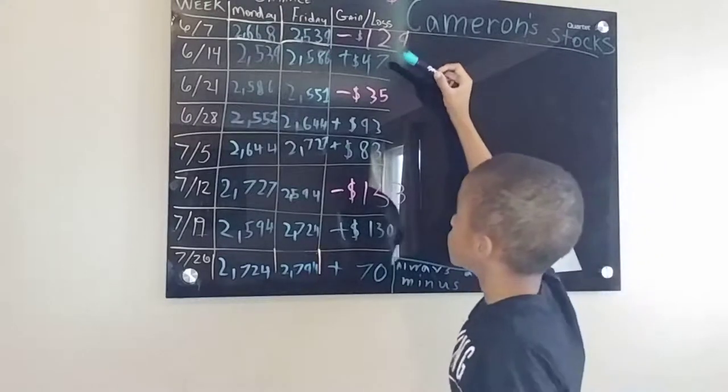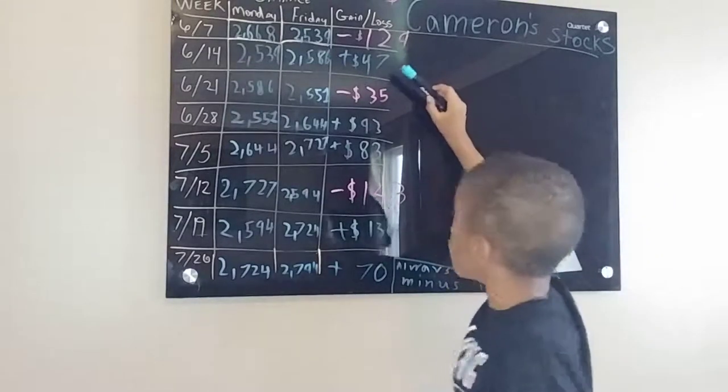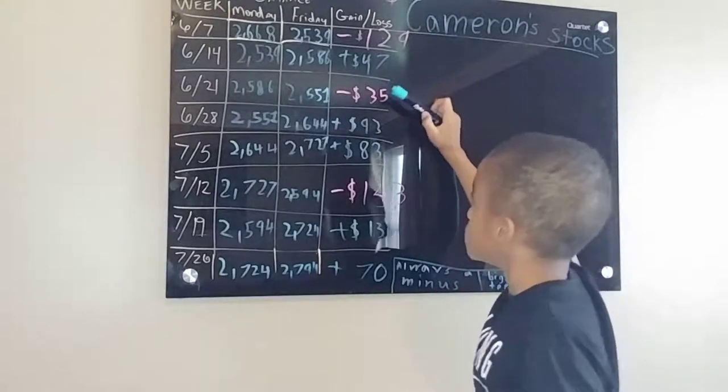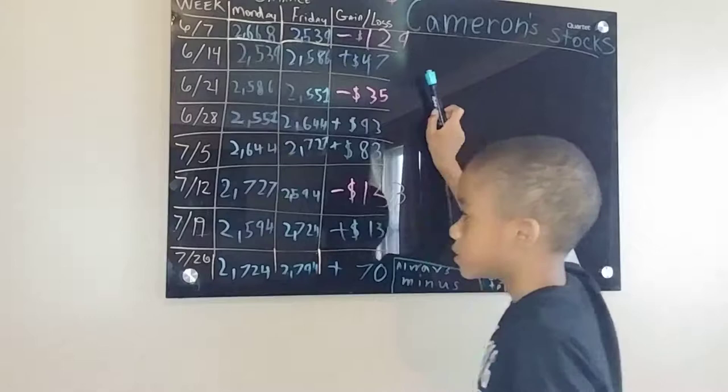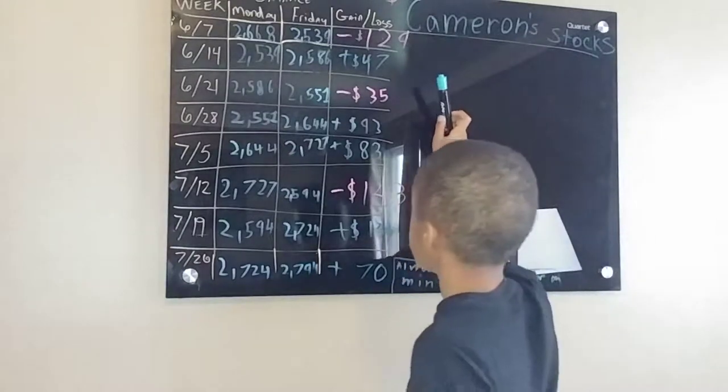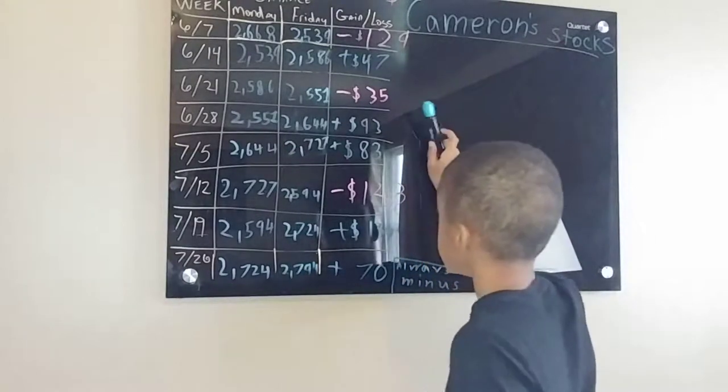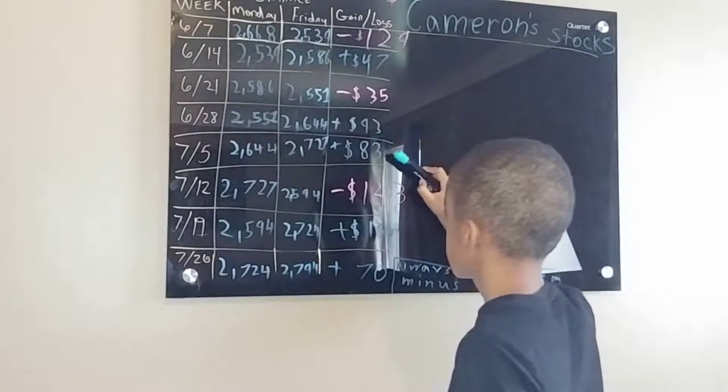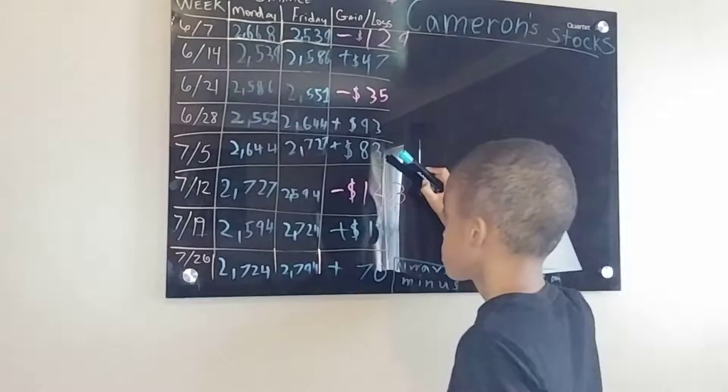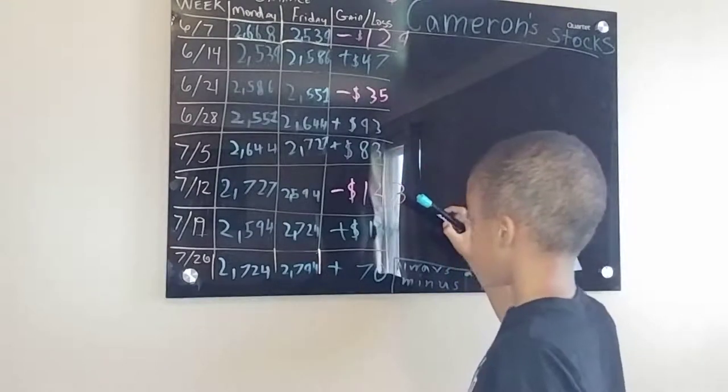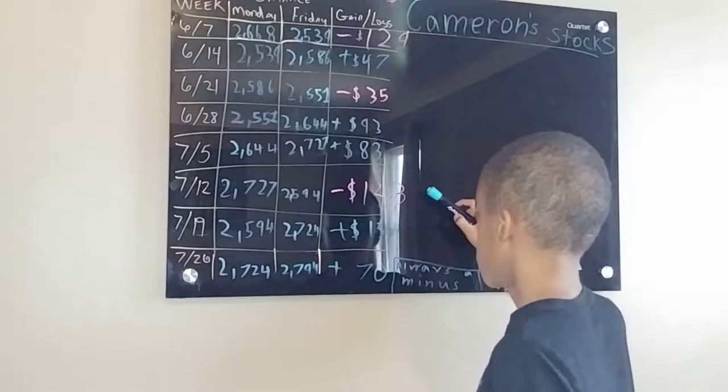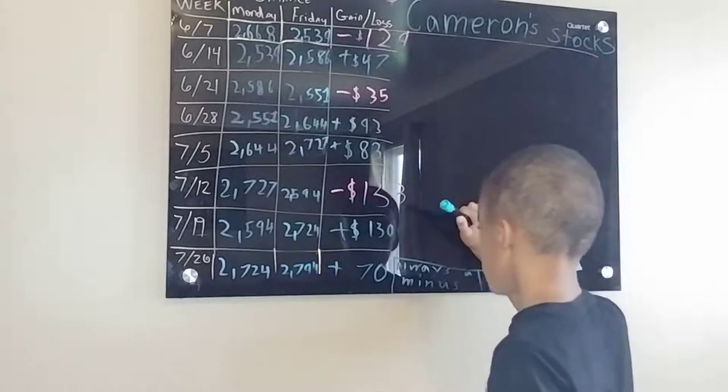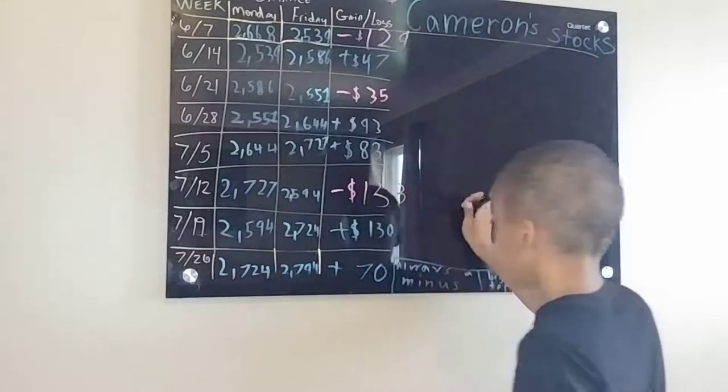Second one, $47, plus, that's a positive $47. Minus $35, plus $93, plus $83, minus $133, plus $130.